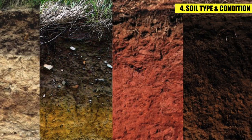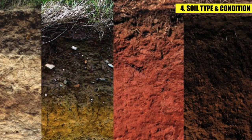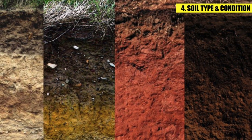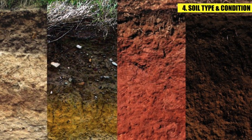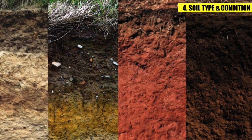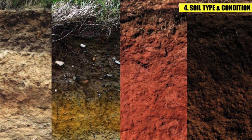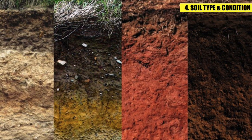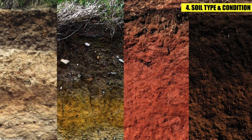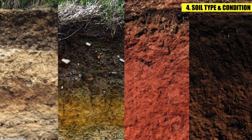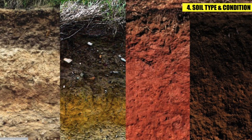4. Soil Type and Condition. Soils vary from place to place, and their properties also vary according to the type of soil — like sandy soil, clay soil, laterite, etc. All have different properties which affect the design of the building. This is very important from a structural point of view while designing a building.